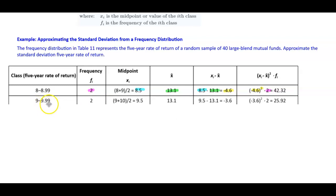The next class is 9 to 9.99. The frequency is 2, the midpoint is 9.5, and the sample mean is 13.1. Taking 9.5 minus 13.1 gives negative 3.6. Negative 3.6 squared times the frequency of 2 gives 25.92.